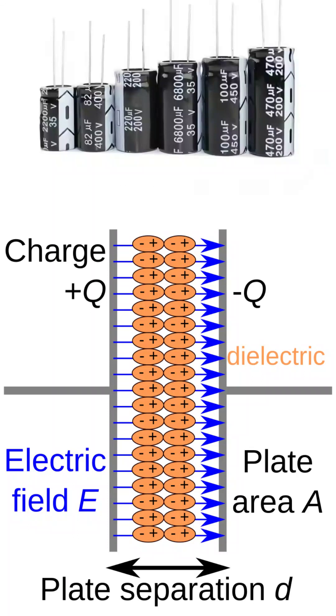When a voltage is applied across the plates, an electric field shown by the blue arrows is established from the positive plate to the negative plate.